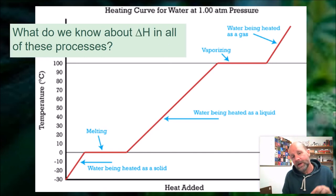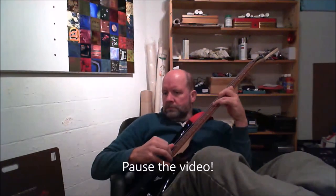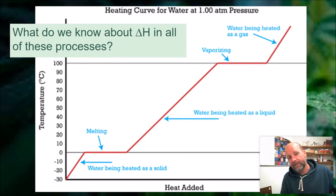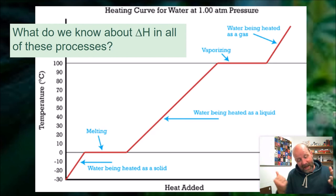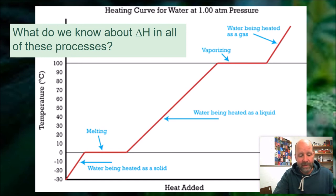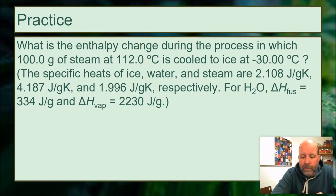If we took steam and cooled it to ice, the graph would be the mirror image — starting high and coming down, flattening during condensation, dropping, flattening during freezing, then dropping again. The numerical values would be the same as heating. The key difference is the sign of ΔH: cooling means heat is coming out, so it's exothermic and ΔH is negative. Heating means heat goes in, so ΔH is positive.